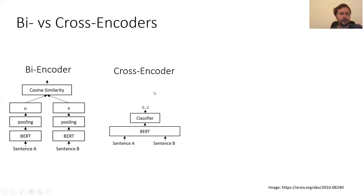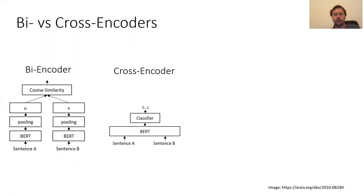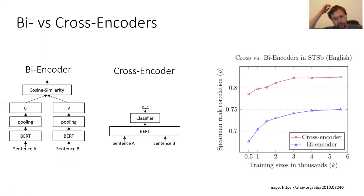What is a cross encoder? For a bi-encoder, we input each text independently, get vectors, and compare with cosine similarity. For a cross encoder, we input both the query and the passage together to a transformer, which performs cross-attention between all tokens in input A and all tokens in input B. At the end, a classifier outputs a score between 0 and 1 indicating relevance. The cross encoder is a lot more powerful — in STS benchmarks, cross encoders perform significantly better than bi-encoders, especially on small datasets.